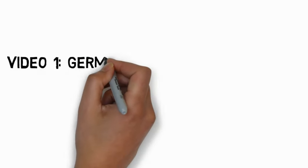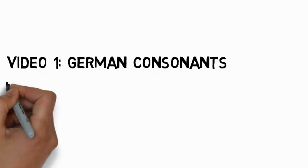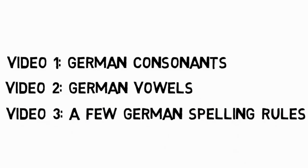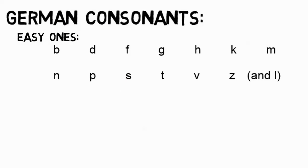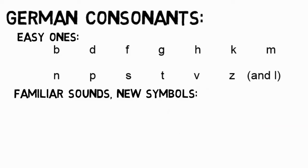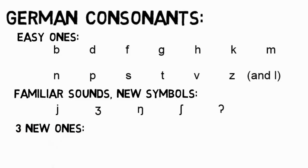We'll break this discussion up into three parts. The first will cover the German consonants, the second will cover the vowels, and the third will cover a few of German's spelling rules. German has 22 consonants, and if you speak English, around 14 of these are relatively familiar sounds and familiar symbols. Five are relatively familiar sounds with kind of new symbols, and only three of these consonants are really new. So we'll start with the easy ones.